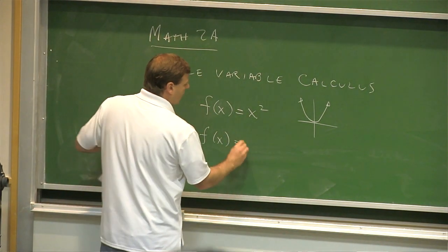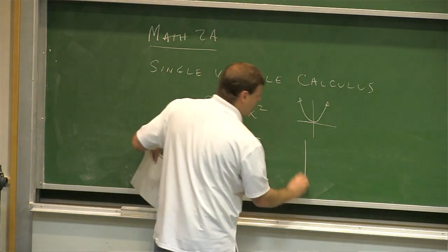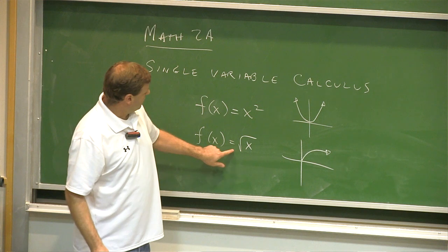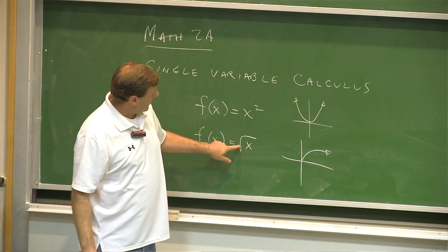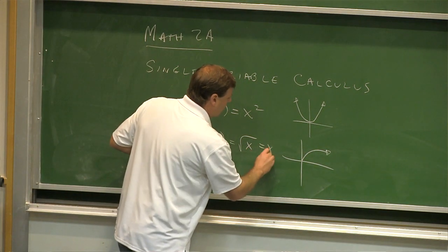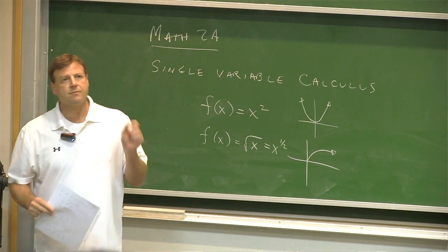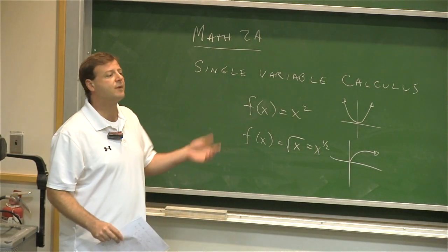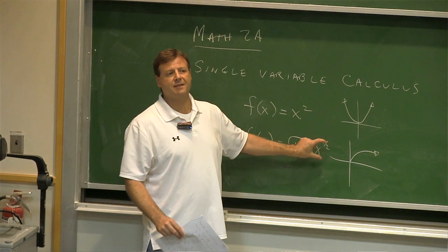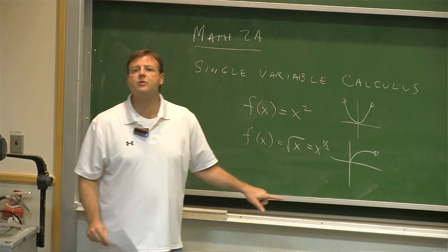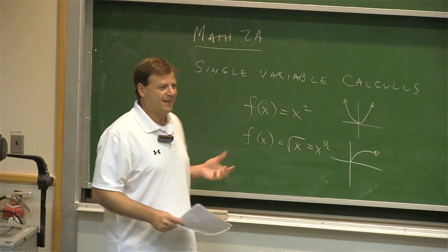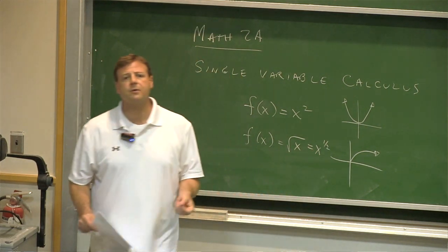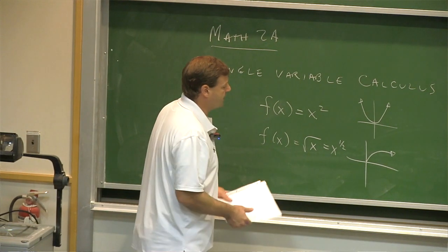Also, square root of x — that's really x to the 1/2. When I say functions involving fractional powers, I mean this one, but also x to the 1/3, x to the 1/4, x to the 1/5, x to the 2/5. This is the general shape for fractional exponents, and the reason they show up in economics a lot is because it models the law of diminishing returns.